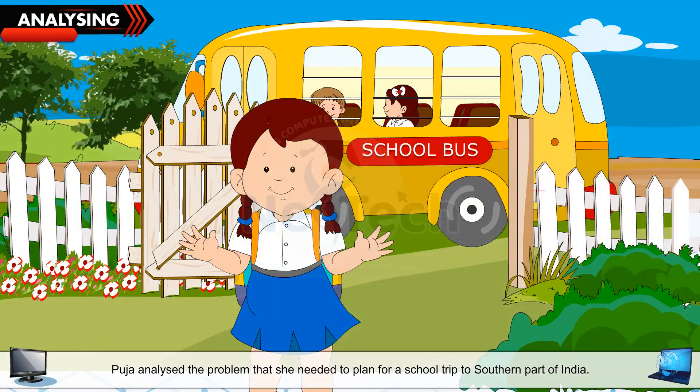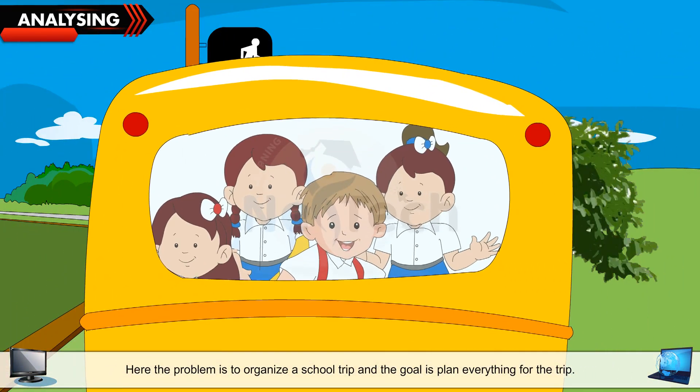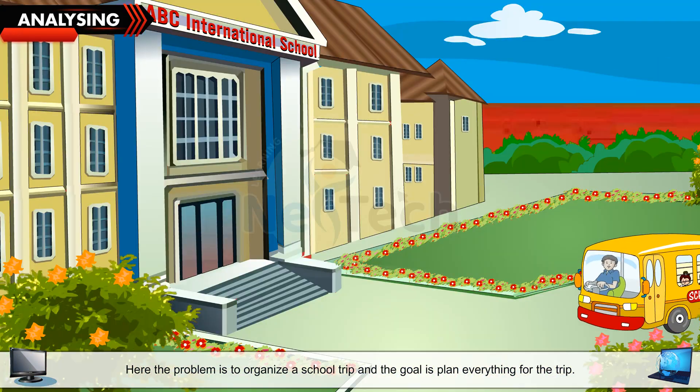Analyzing: Pooja analyzed the problem that she needed to plan for a school trip to southern part of India. Here the problem is to organize a school trip and the goal is to plan everything for the trip.